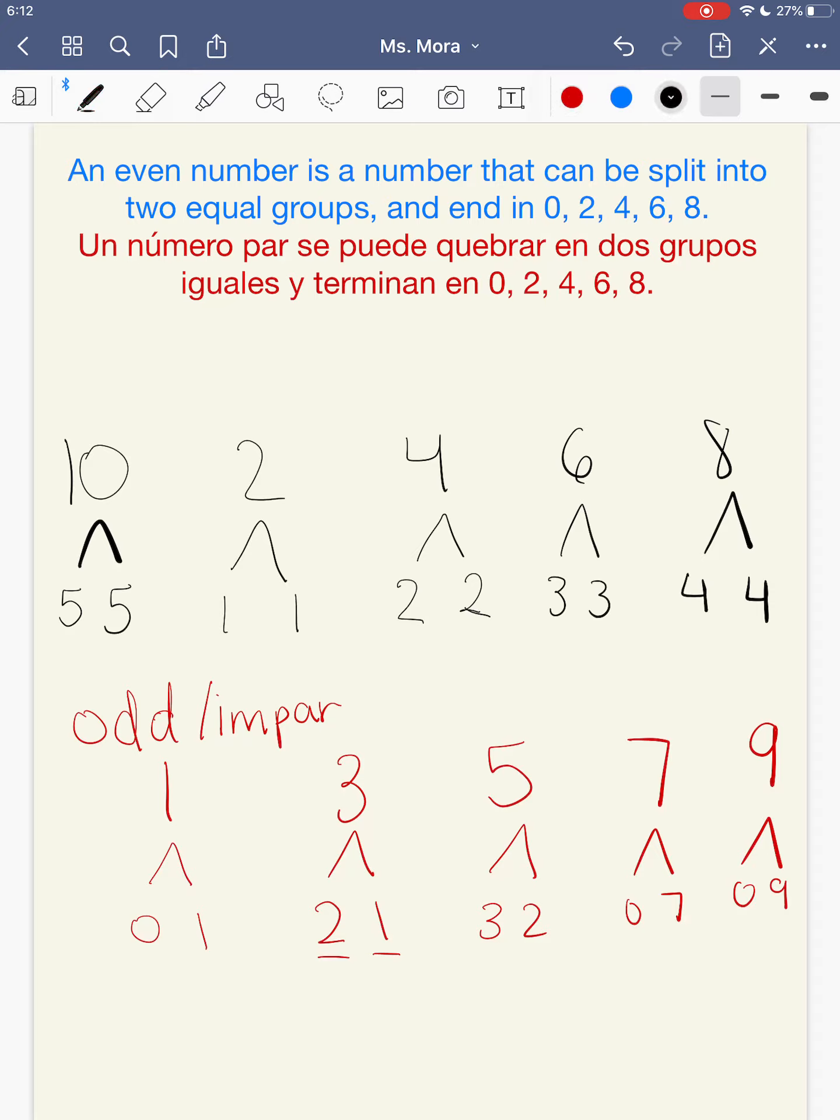So guys, anytime your number ends in 0, 2, 4, 6, or 8, your number is even when it has those numbers in the 1's place. But when it has a 1, 3, 5, 7, or 9 in the 1's place, it's going to be an odd number. Cuando tus números terminan con 0, 2, 4, 6, or 8 en el lugar de las unidades, es par. Y cuando termina en 1, 3, 5, 7, y 9, es impar.